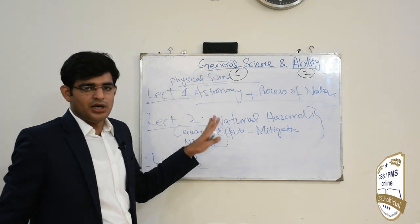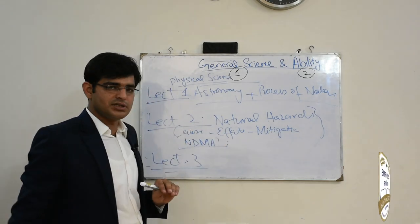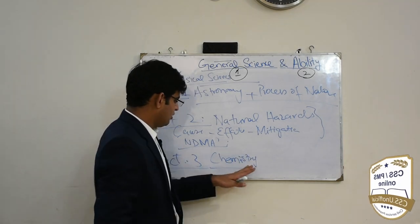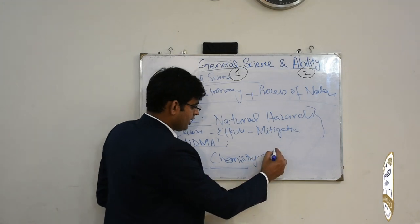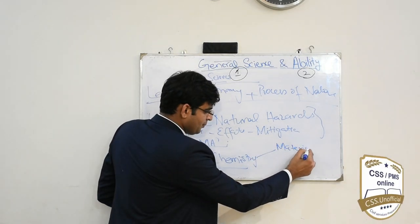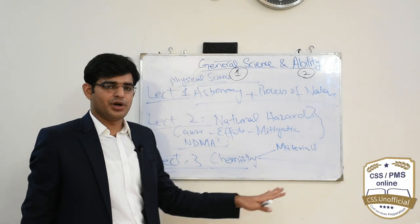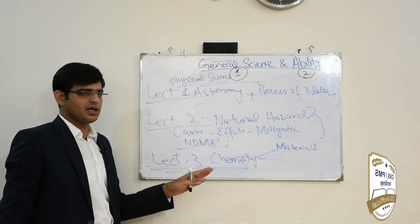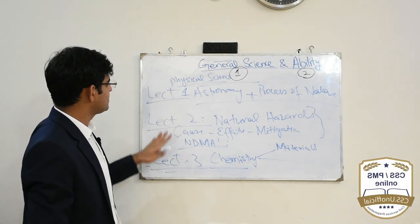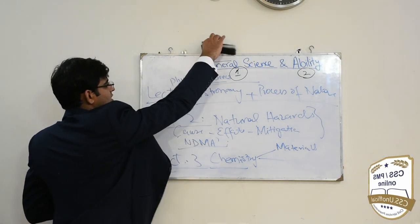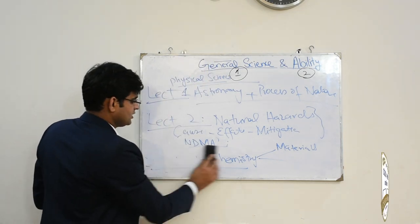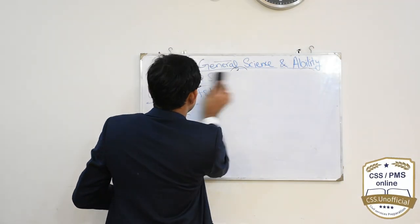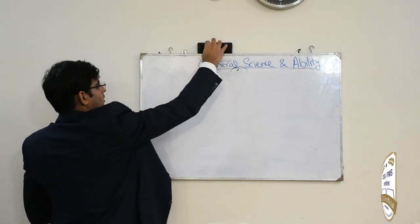Lecture 3 میں remaining physical sciences cover کریں گے جس میں chemistry ہے — different materials، chemical bonding، electromagnetic rays، اور light شامل ہیں۔ اس طرح ان 3 lectures میں general science کا پہلا portion یعنی physical sciences مکمل cover ہو جائے گا۔